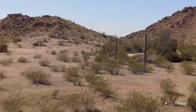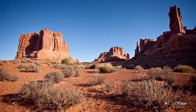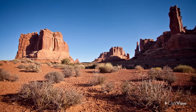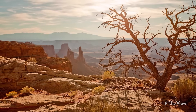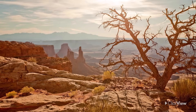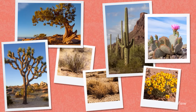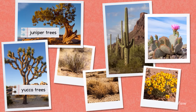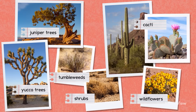A desert is an area of land where very little rain falls. Deserts are very dry, with lots of sand, dust, and rocks. Only certain plants can grow in this harsh environment. In a North American desert, you may spot yucca and juniper trees, cacti, shrubs, tumbleweeds, and wildflowers.